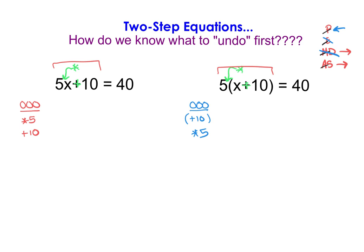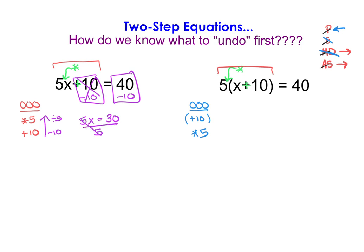To solve these, all we need to do is undo our order of operations in reverse. The opposite of adding 10 is subtracting 10. So if I subtract 10 from each side, they undo each other and we're just left with 5x. On the other side, we have 30. Then to undo a multiplication of 5, we divide by 5. Those 5s undo each other because 5 divided by 5 is 1, so we're left with x equals 6.